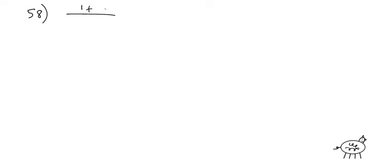Problem 58: 1 plus cosine of 2x divided by sine of 2x equals cotangent of x. Definitely working on the left-hand side — it's very complicated to try to manipulate cotangent, which is just cosine over sine. For cosine of 2x, I want to choose the form that gets rid of the 1.